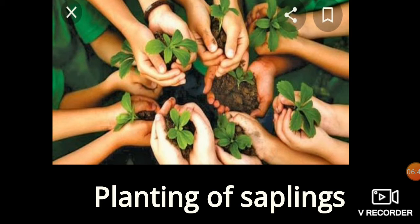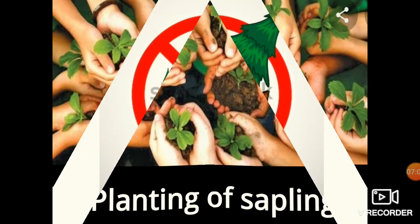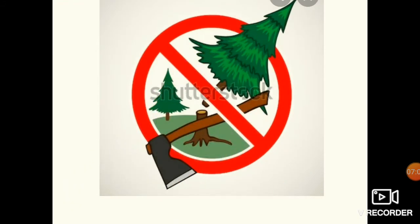It is our duty, children, to make our earth green and clean. So we should plant saplings. You can see small hands planting saplings in the school, neighborhood, or park. We should take interest in planting saplings. This picture shows a ban on the cutting of trees.